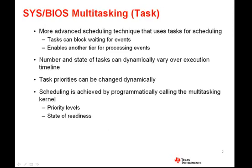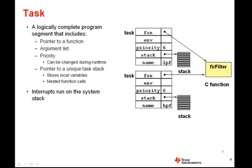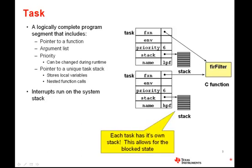The BIOS scheduler always determines which thread is the actual one executing at any given time, and it will do this based on the thread's priority level and whether or not it is blocked while waiting for an event. Each task can be thought of as a logically complete and self-contained program segment, and includes such elements as the function that executes when the task is running, a string name, and a priority that can change during runtime. Each task can also have an environment pointer that basically allows a unique data structure to be tied to that task instance.